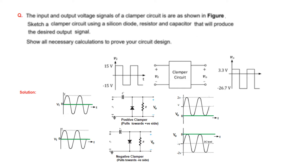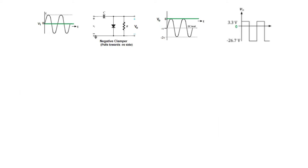We need to use the negative clamper circuit but modify it. Our aim with the negative clamper is to move the signal slightly up to 3.3 volts.